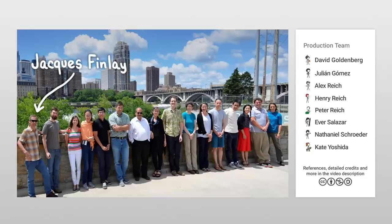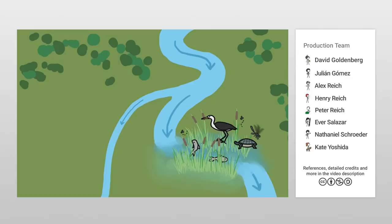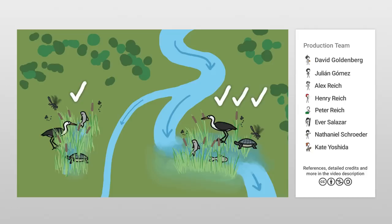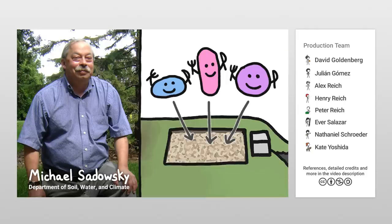Professor Jacques Finlay and postdoc Christy Dolph in the College of Biological Sciences, along with collaborators, have found that if we restored wetlands in strategic locations where they could intercept lots of water, they'd be three times more effective at removing pollution than wetlands restored elsewhere. Professor Michael Sadowski in the Department of Soil, Water, and Climate is identifying the bacteria that remove chemicals from water sent through woodchip trenches.